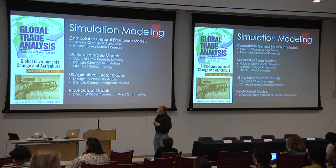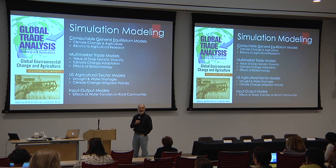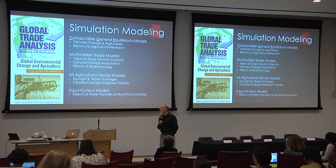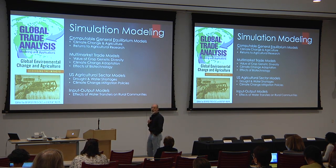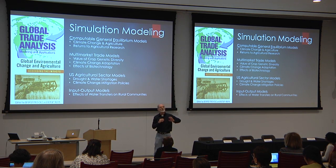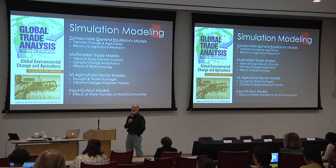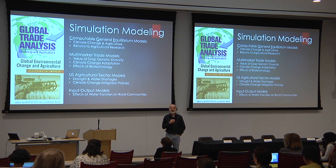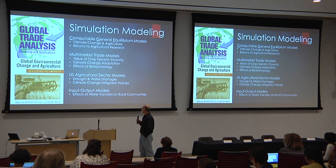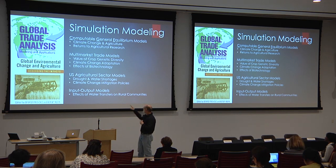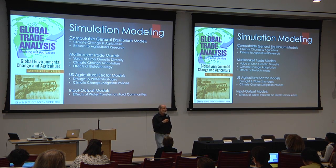We've also done smaller multi-market trade models, including U.S. ag sector models with multiple agricultural sectors. One thing most USDA models don't include are vegetables — they tend to focus on major commodity crops like corn, soybeans, and wheat. A lot of USDA models also don't include water as an input, so we developed a model that explicitly includes water. One of the things we were looking at is the effect of large water shortages in the West, and we also used it to look at climate change mitigation policies — cap and trade and cap and trade with agricultural domestic offsets.